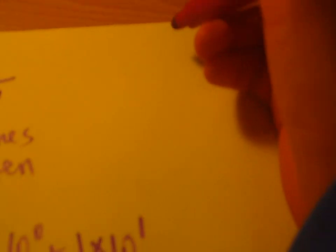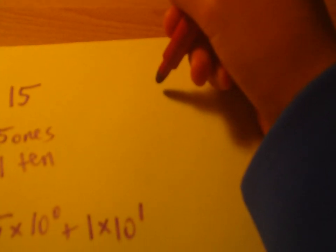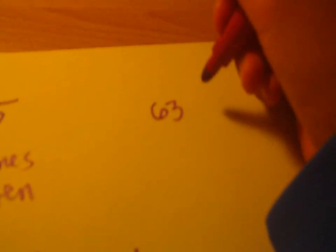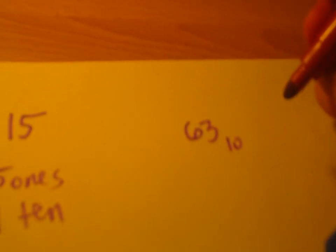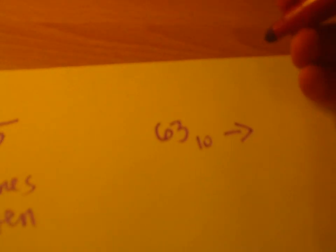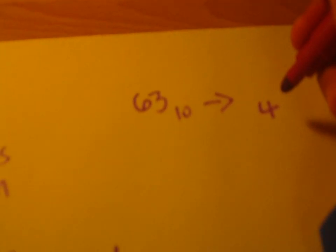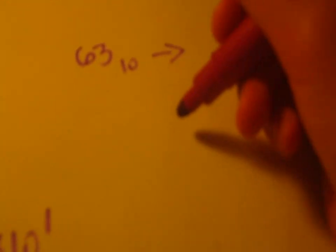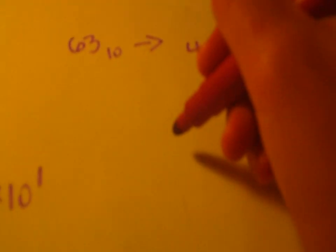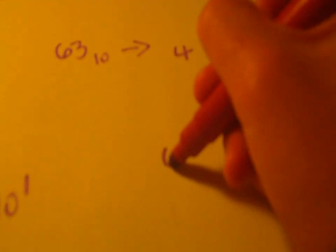So, assume you took the number, let's say, 63 in base 10, and you want to convert it to base 4, for example. So, if you want to convert from base 10 to base 4, so if you want to convert to base 10 to base n, what you do is you take the number you want to convert, you take the number 63,